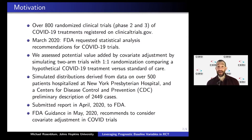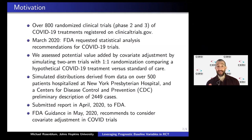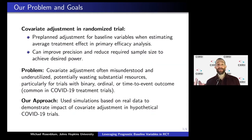A month later, after we sent this to them, the FDA put out a guidance document for COVID trials. One of their recommendations was perfectly aligned with what we suggested, which is considering covariate adjustment. So what is covariate adjustment?